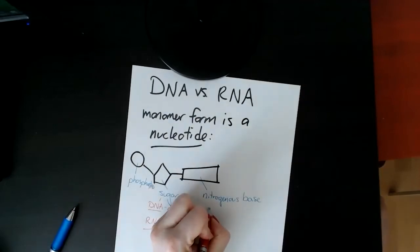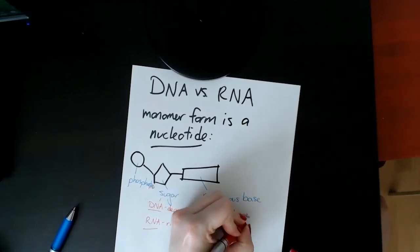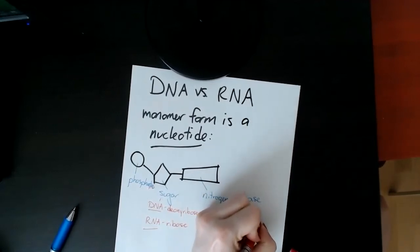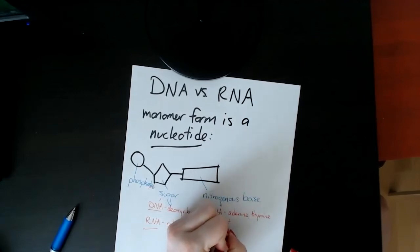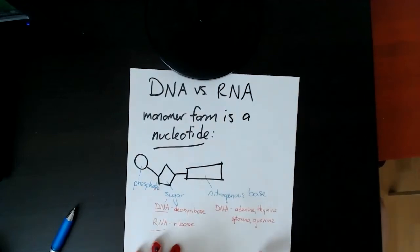In DNA, there are four nitrogenous bases: adenine, thymine, cytosine, and guanine. They come in pairs — adenine always pairs with thymine, and cytosine always pairs with guanine.